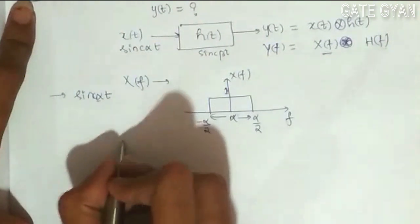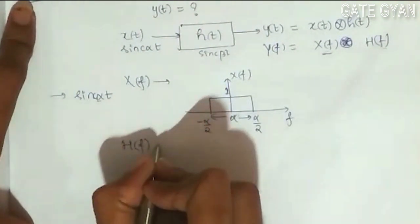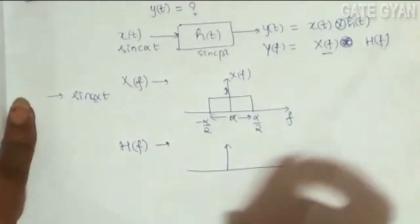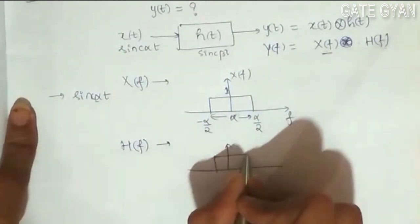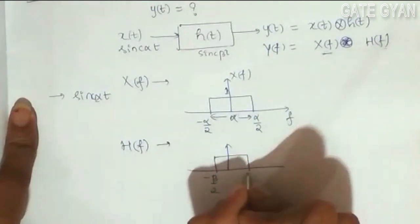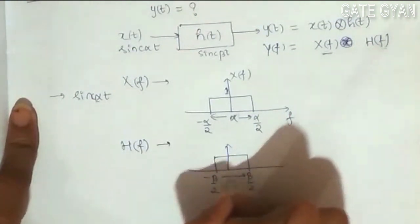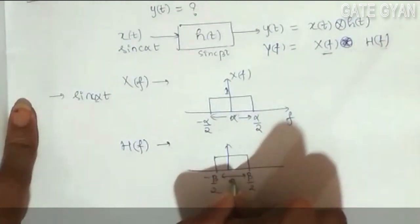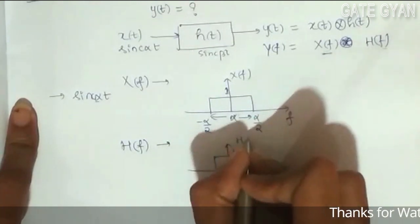Similarly, my H(f) is going to be minus beta by 2 to beta by 2 as this distance is going to be beta. Magnitude 1, this is my H(f).